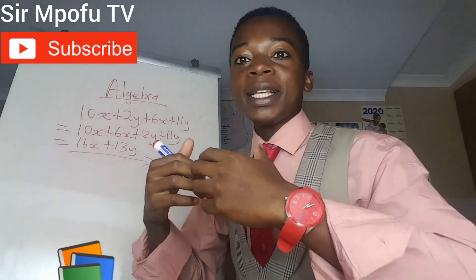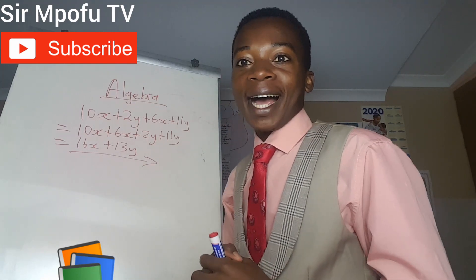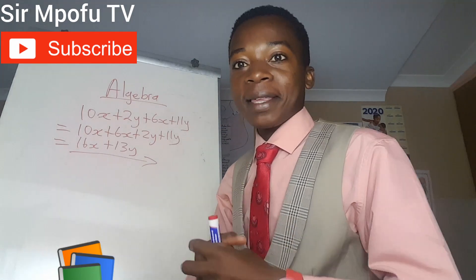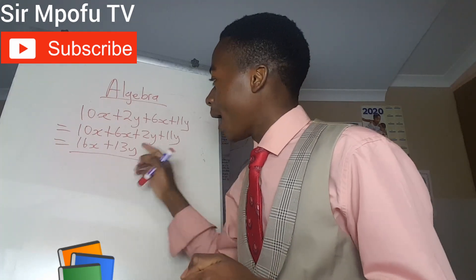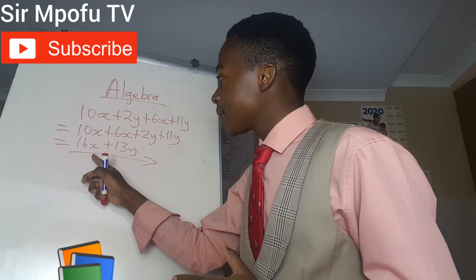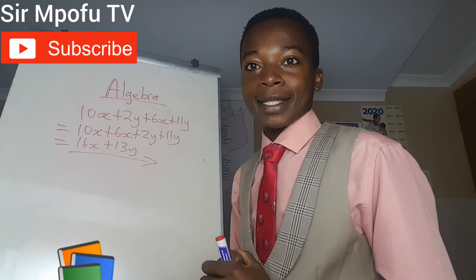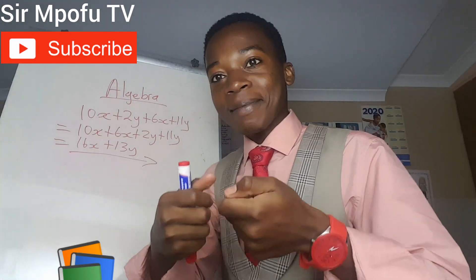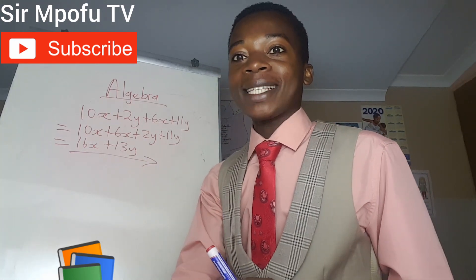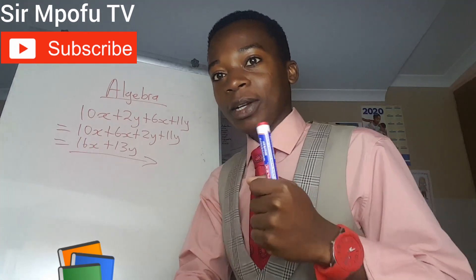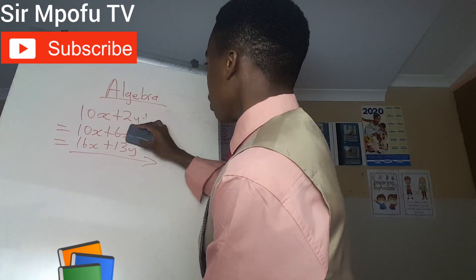This will be your final answer. From here, you don't simplify further because we don't have like terms anymore. Let me explain: if x represents dogs and y represents cats, can you say 16 dogs plus 13 cats? It's impossible. So if you don't have like terms anymore, you don't simplify further. Also take note: you collect like terms with their signs.